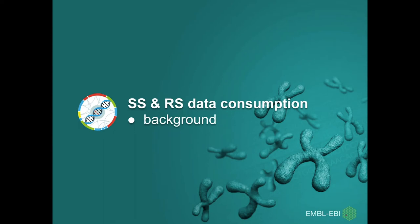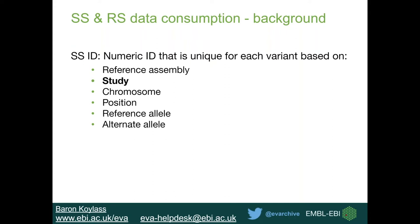I want to talk about the bulk of the webinar: the SS and RSID data consumption — how variants are assigned to these IDs, what these IDs mean, and how they can be used. Many of you may have heard of RSIDs, which are more widely referenced in publications on genome variation. However, they are based on SSIDs. An SSID is a numeric ID that is unique for each variant based on the assembly used, the study it's come from — which is an important factor — chromosome position, and the reference and alternative allele.